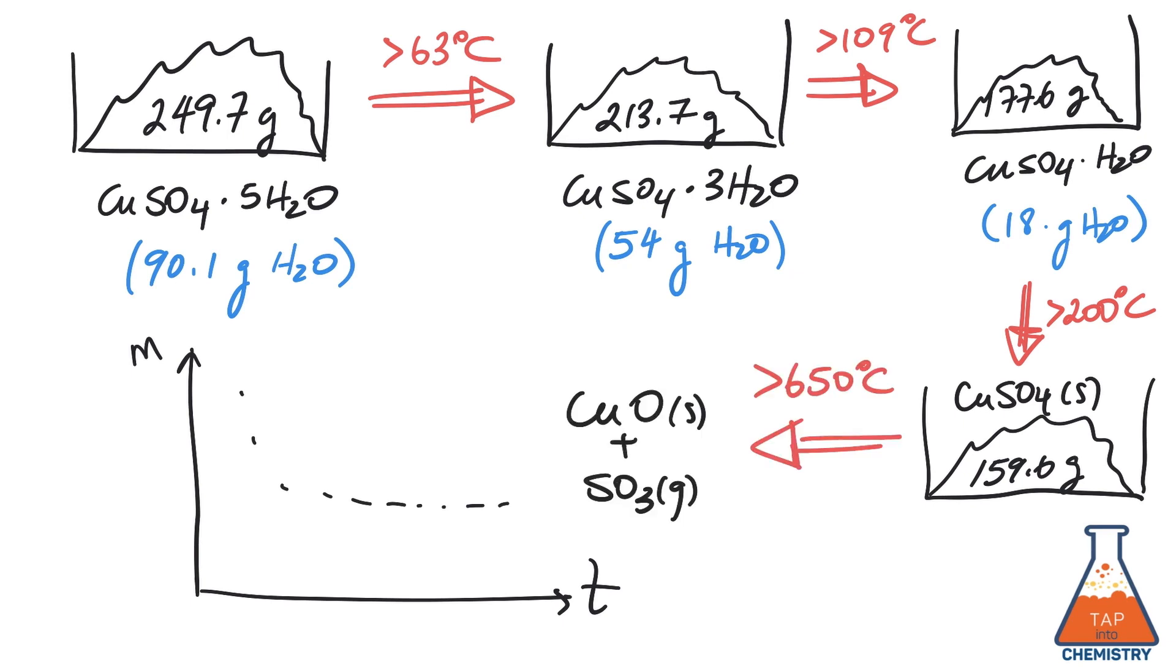Continuing to heat to above 650 Celsius will eventually thermalize the product to a final thermodynamically stable form, copper oxide, and drive off sulfur trioxide gas.